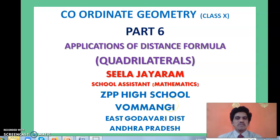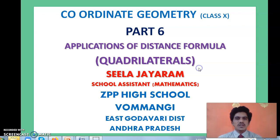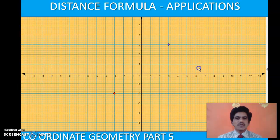Good morning students. Welcome to the 6th part of Coordinate Geometry. In this session, we will apply the distance formula to quadrilaterals. In the previous class, we learnt how to apply the distance formula to triangles. We found the lengths of the sides and categorized them into equilateral, isosceles, or scalene triangles by calculating those lengths.